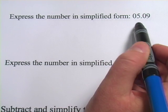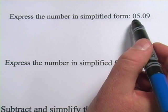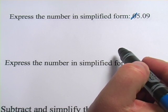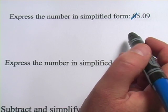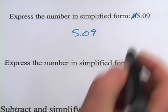This one, we have 05.09, and really that's just the number 5.09. You don't need that zero in front of it. It means the same thing. So that's all you would do. You'd write 5.09.